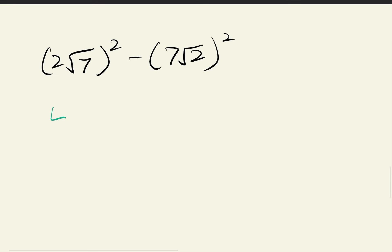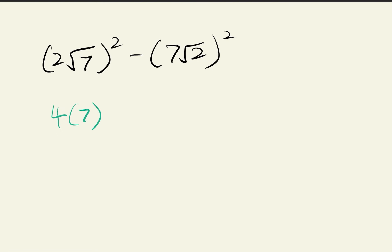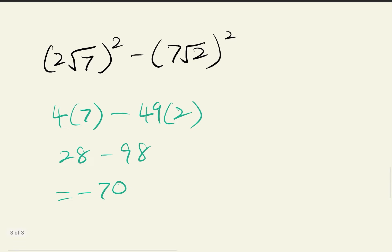First, you can just square the number immediately. So, two square is four, seven, square root seven square is just seven. Then we minus. So, same thing here. Work things out. What we end up getting is 28 minus 98. So, what we'll get is negative 70. That is our answer.